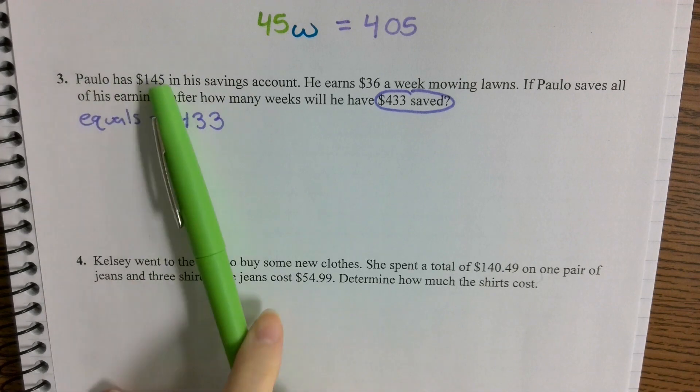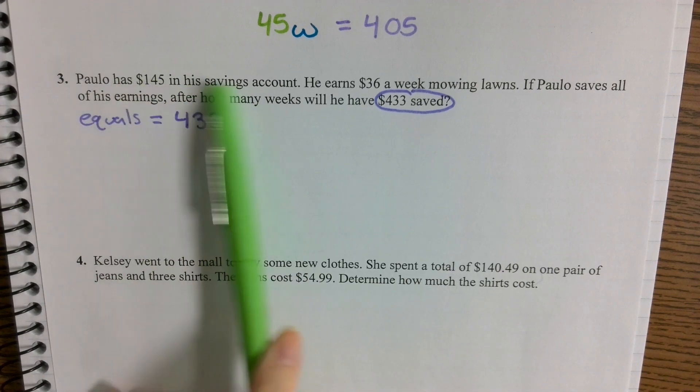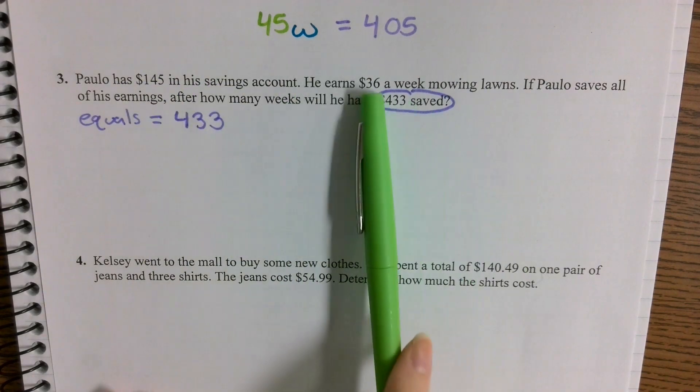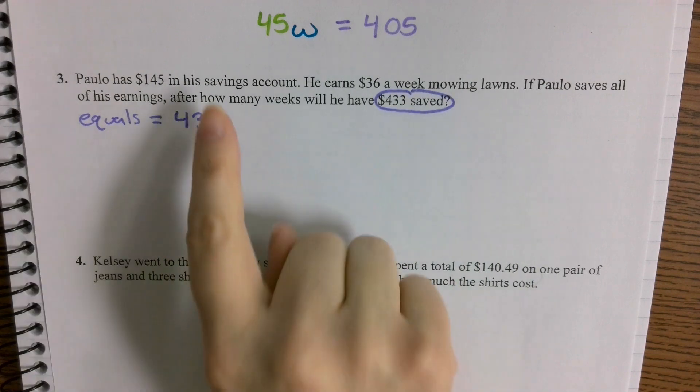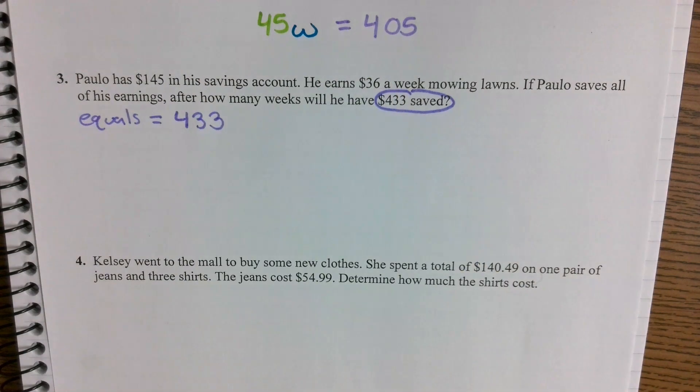So we have two other amounts. We have $145 in his savings account and we have $36 a week mowing lawns. So since we have two amounts, one of those is probably going to be a coefficient. Which one of them is going to be a coefficient?